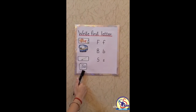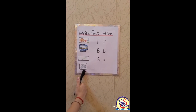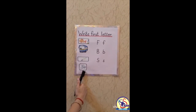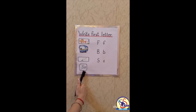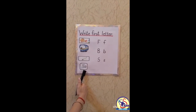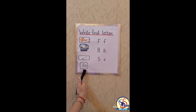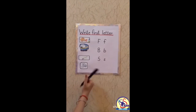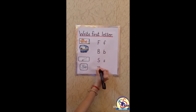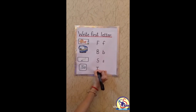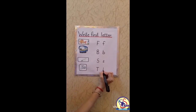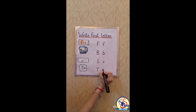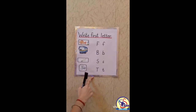Which picture is this? This is a tap. So when we pronounce tap, how it sounds? T. Tap. So which letter sounds? T. Letter T. So we will write capital T and small t.